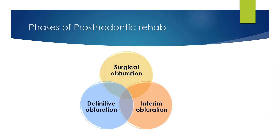Prosthetic therapy for patients with acquired surgical defects in the maxilla can be divided into three phases of treatment, each having different objectives. The initial phase is called surgical obturation. The second phase is called post-surgical interim obturation. The third phase is called definitive obturation.